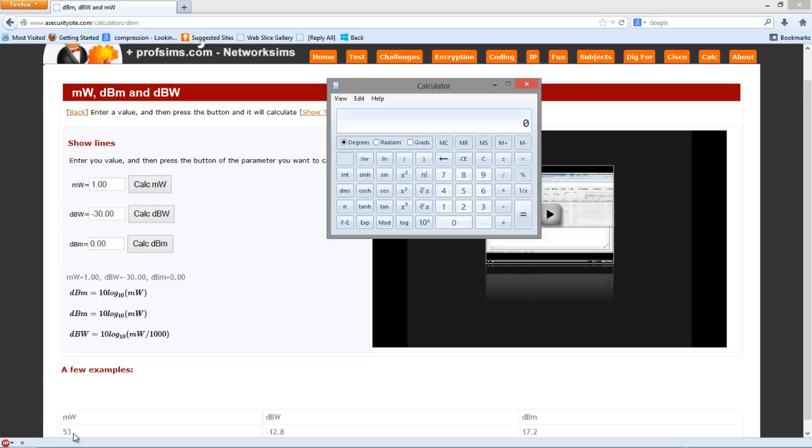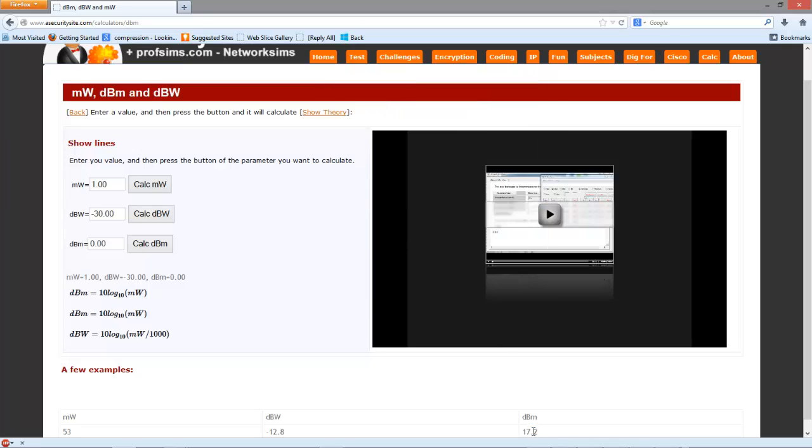So an example that we have here is 53. So we'll take 53 milliwatt divided by 1 milliwatt gives us 53. Now we'll take the log to the base 10 of it and then multiply by 10. Okay so the value we get for our dBm is 17.2, which is what we get here.